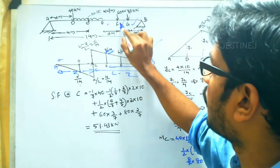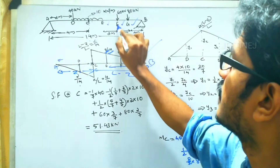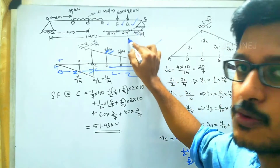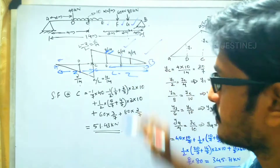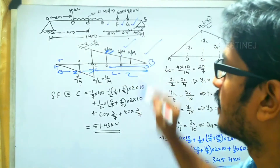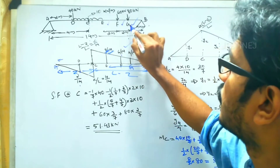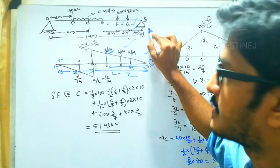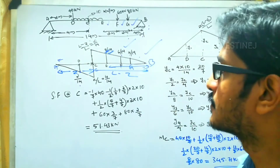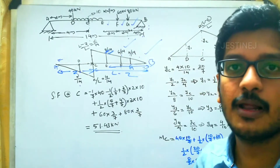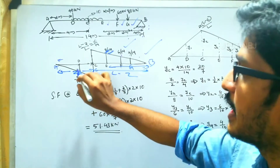At point F, the remaining distance F to B is 2 + 4 = 6 meters, giving ordinate 6/14. At point G, the distance G to B is 4 meters, giving ordinate 4/14. In this way we assign the magnitude at each point on the influence line diagram.